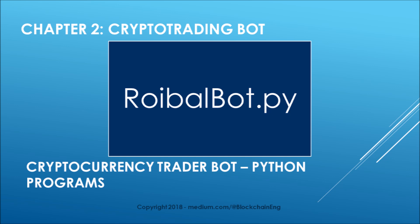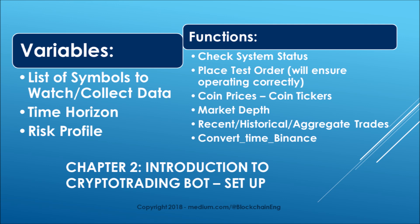We will now discuss rooiball.py, which has the main formatting and pulls from different examples including save_historical_data. The variables it accepts include a list of symbols to watch — the cryptocurrency pairs you want to go long and short — a time horizon for short, medium, or long term, and a risk profile so the bot can operate at either low risk or high risk based on user preference.